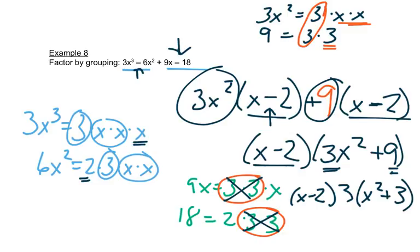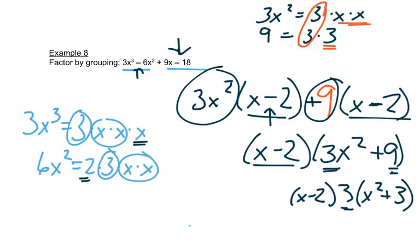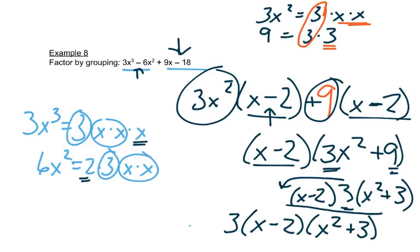Now we don't normally like to leave that number in the middle like that, so we usually take that number and we write it out in front. So we have 3 times x minus 2 times x squared plus 3. I'm just moving this, and this is our final answer.